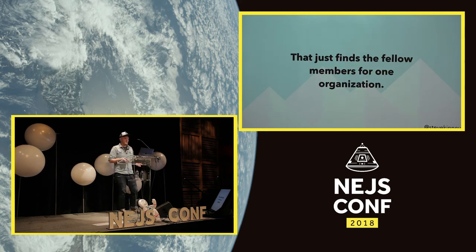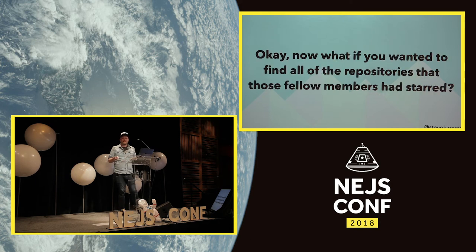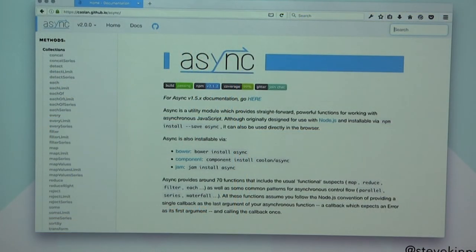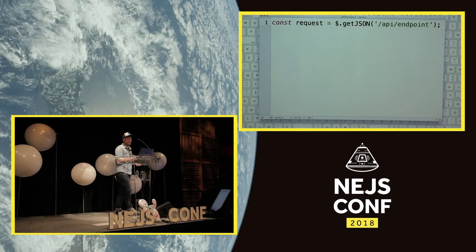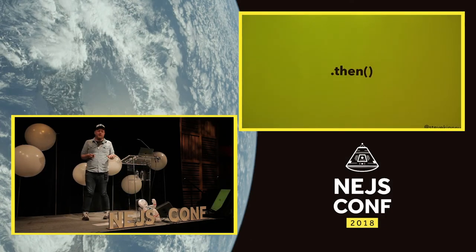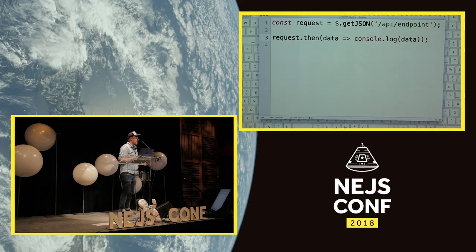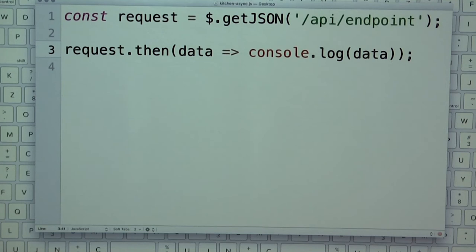There are libraries like async on npm that solve this, but we also have other tools in the language now. jQuery supports promises where you can store an asynchronous request in a variable. jQuery's aren't technically promises — they're Deferreds, or 'thenables' — but generically speaking: when you call an async request you get back an IOU. Eventually you'll have something back from the server or an error.